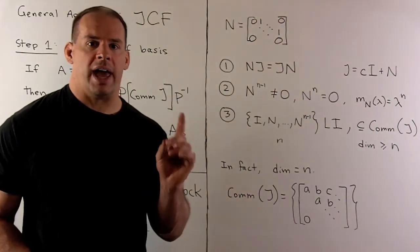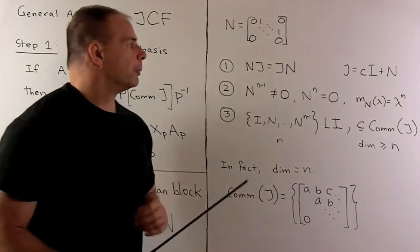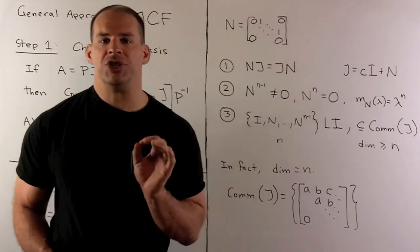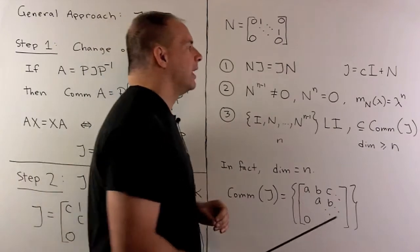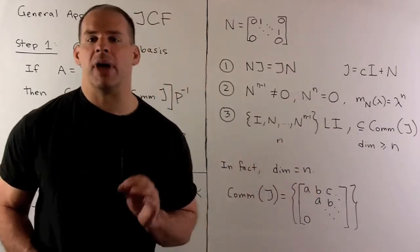Taking a closer look at N, we know N and J commute. So if we write J as C times I plus N, N commutes with I, N commutes with itself, so N commutes with J.